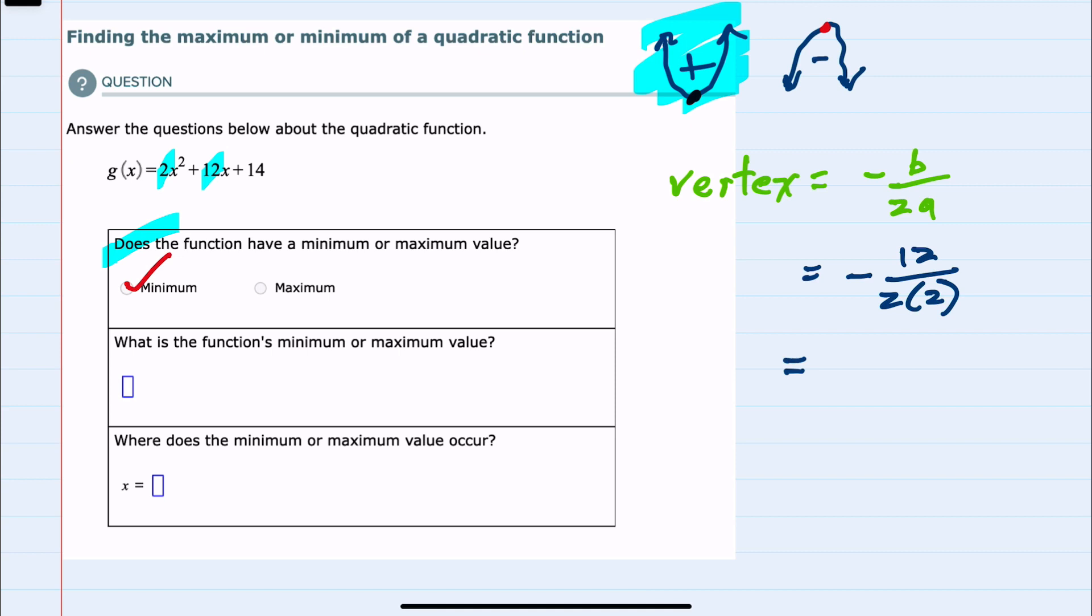We can now simplify. We have a negative 12 in the top and 2 times 2 is 4 in the bottom. So negative 3 is the x value for where the vertex occurs.